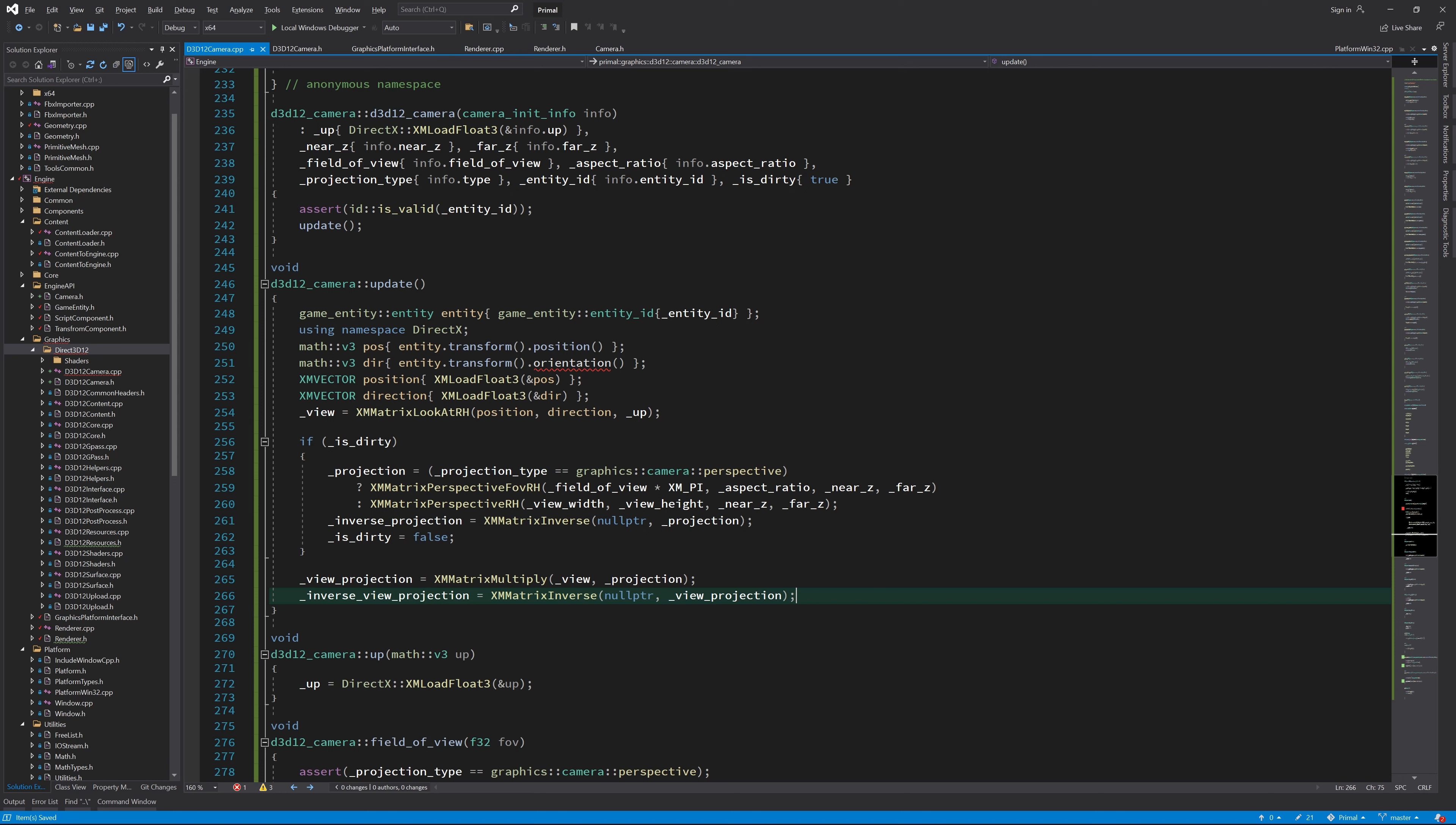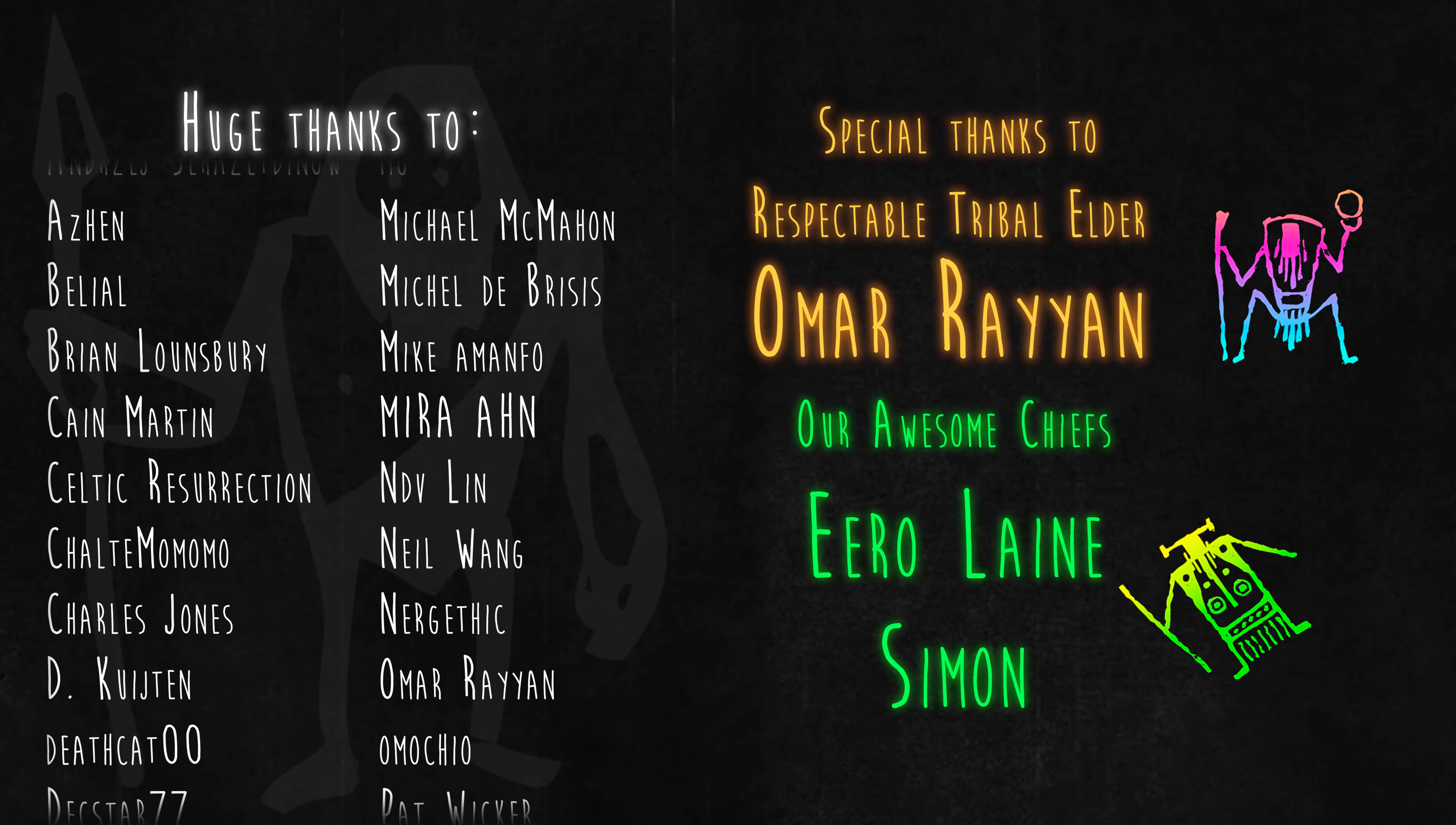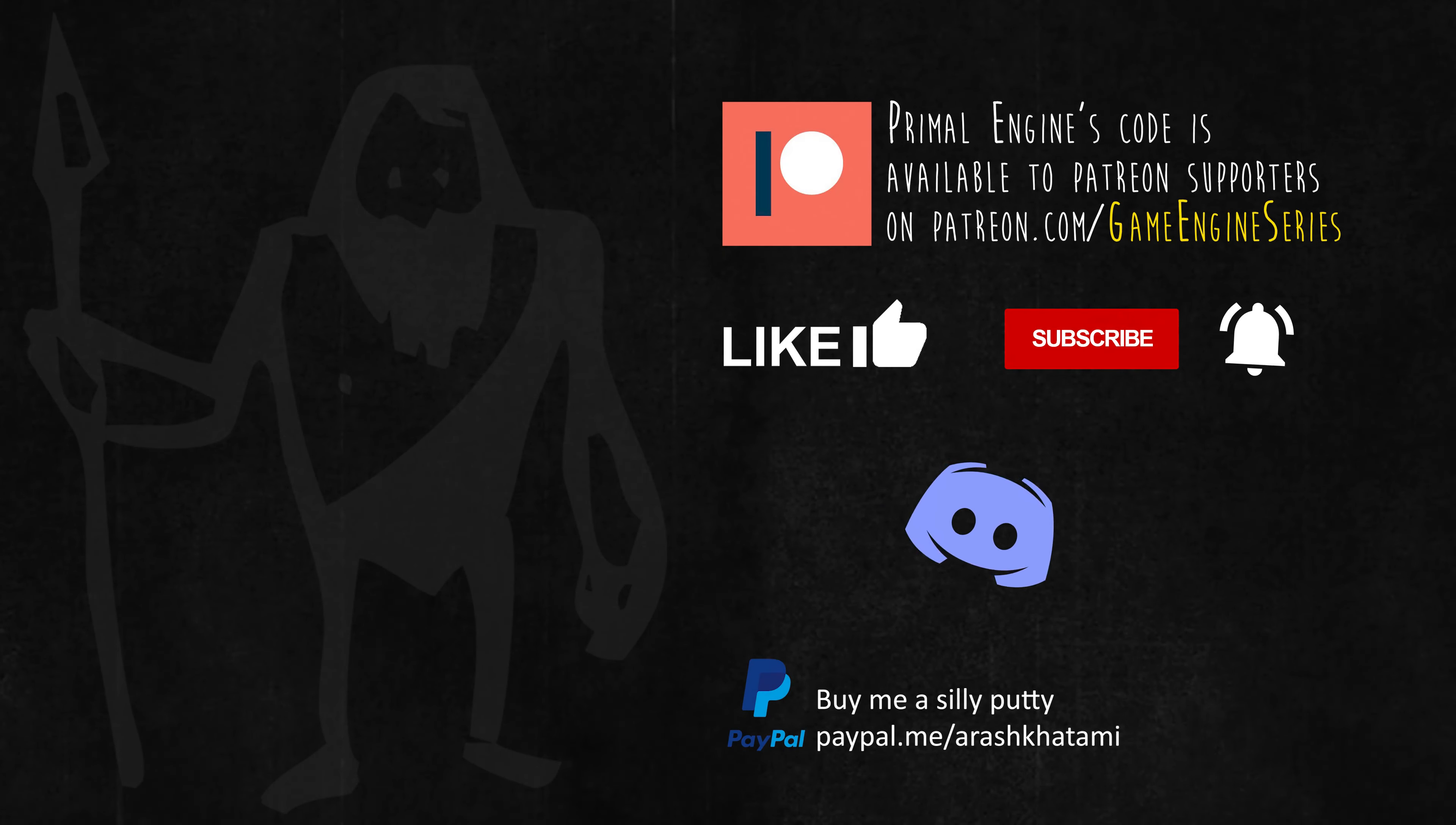For the view matrix we need to have the direction towards which the camera is oriented. This orientation is going to be a part of game entities' transform component, which is calculated whenever we rotate each game entity. Because rotations play a particularly important role in games, I think it's beneficial to have a better understanding of the mathematics behind rotations as well. This is going to be another video with mostly mathematical explanations, so if you feel you already know how rotations are represented in both matrix form as well as quaternions, then feel free to skip this video.